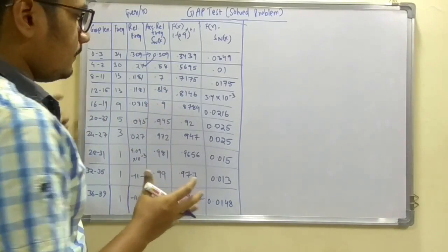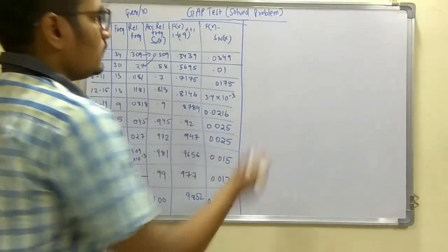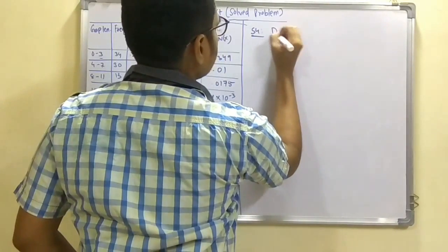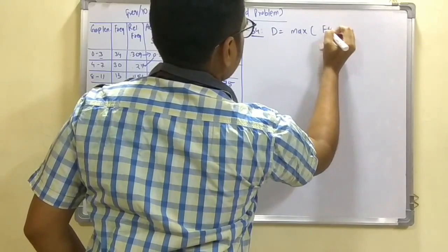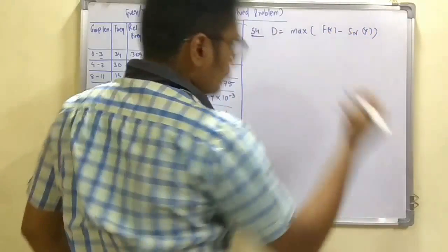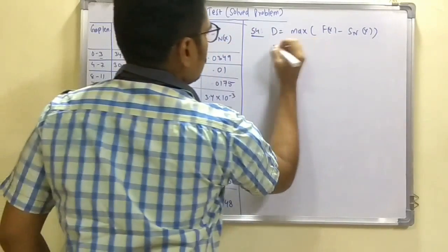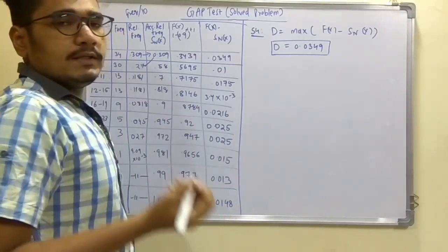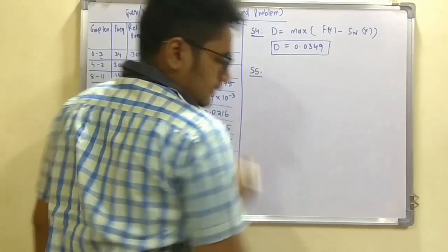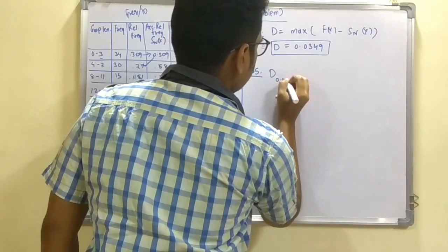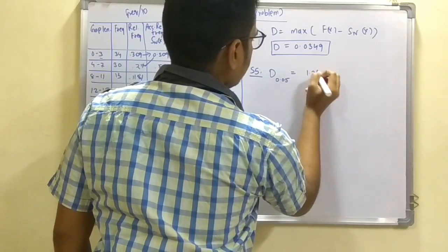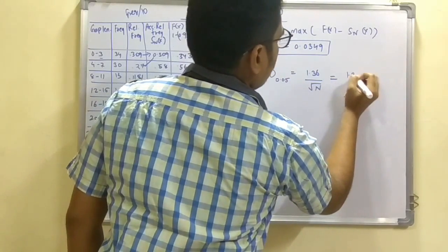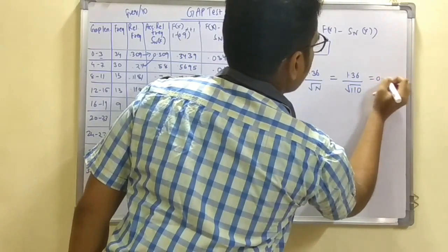This completes the entire table for the gap test. Moving on to step 4: calculate the maximum of |F(x) − Sn(x)|, which is d = max|F(x) − Sn(x)|. The maximum value is the first row value, giving d = 0.0349. In step 5, calculate d_alpha at alpha = 0.05 using the formula 1.36 / √n = 1.36 / √110, which gives d_0.05 = 0.129.